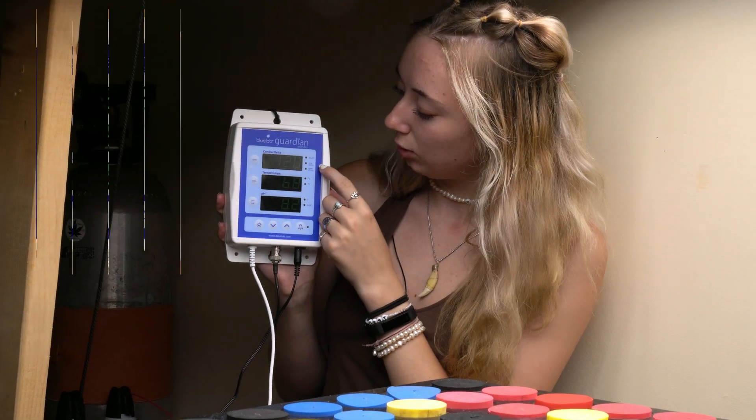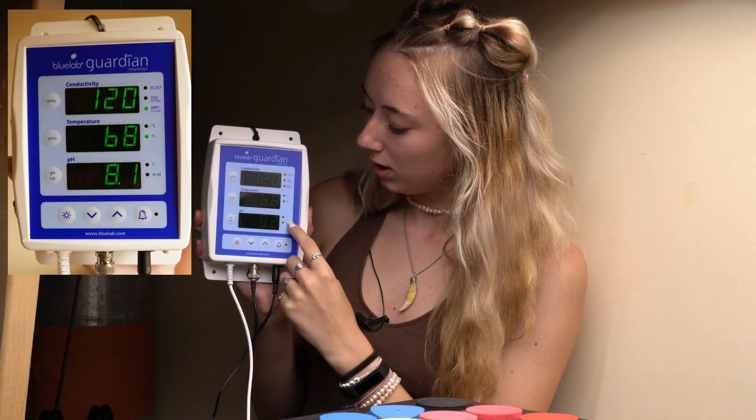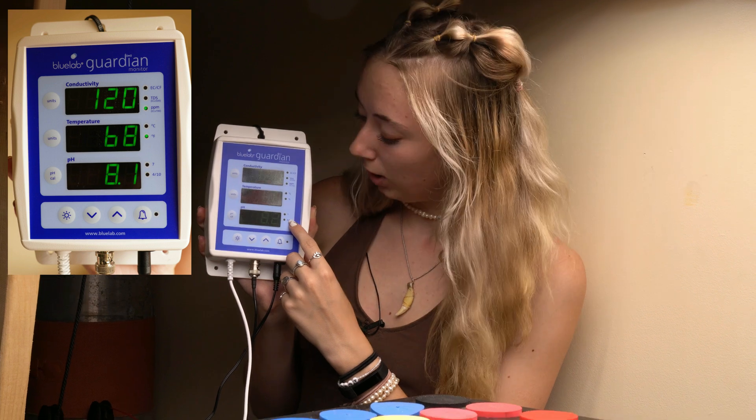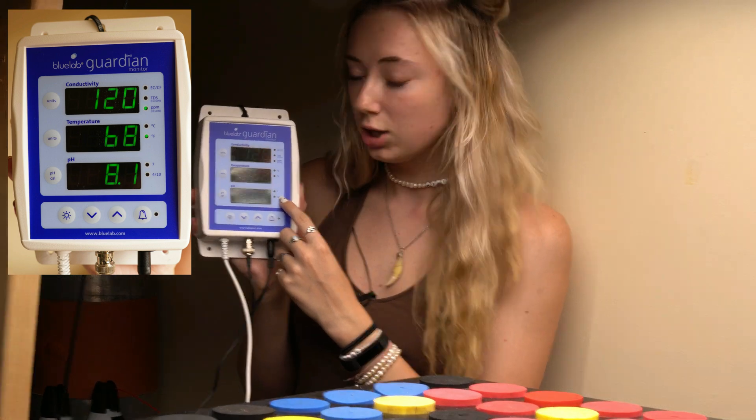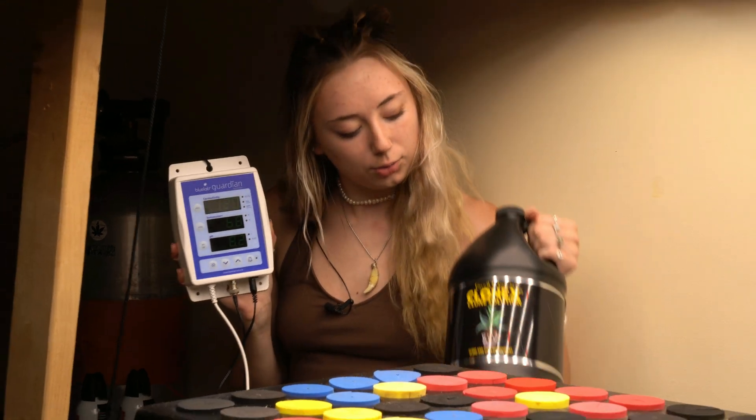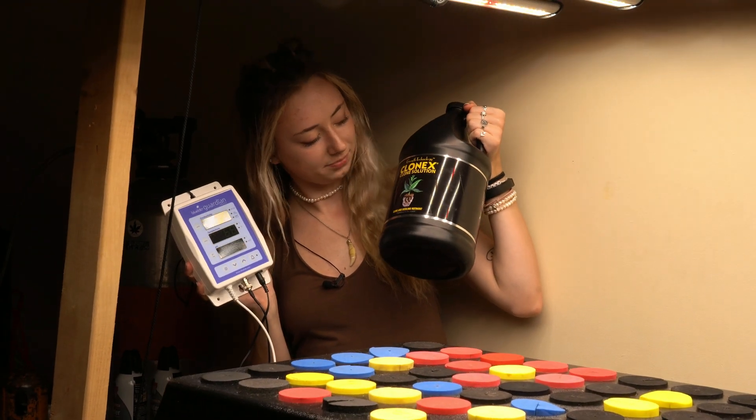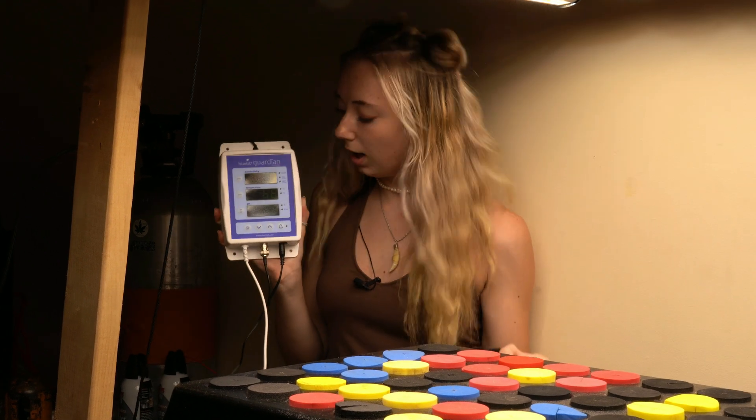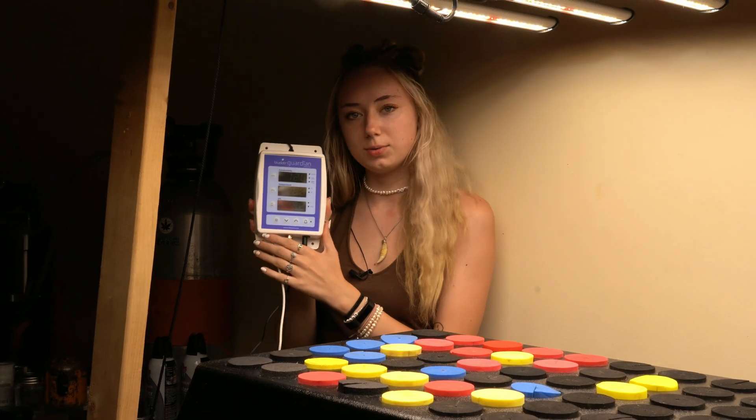So our conductivity is reading low at 120. Quite the opposite for the pH, it's reading a little high at 8.1. So what we're going to do first is adjust our conductivity with our Clone X grow solution. This will help us adjust our conductivity to be raised higher.